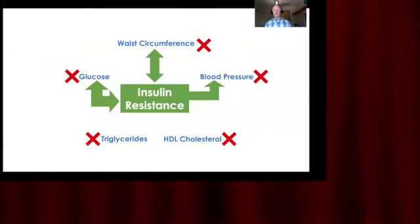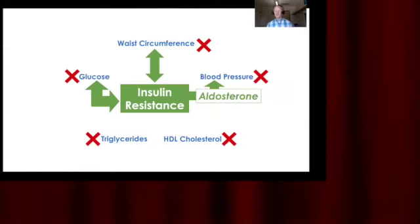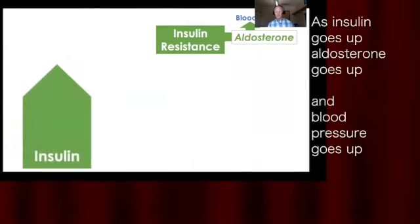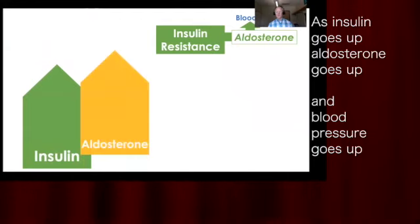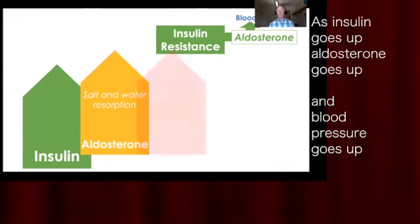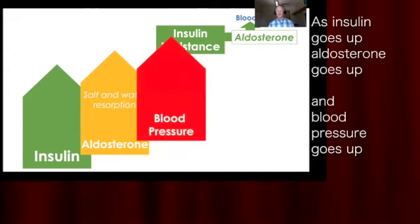Let's move on to blood pressure as we continue to circle around insulin resistance. This is all through the actions of a hormone called aldosterone. When insulin goes up, aldosterone goes up. Aldosterone's main effect is to induce salt and water retention or resorption at the kidneys. As volume goes up, pressure will go up as well, giving us an increase in blood pressure.